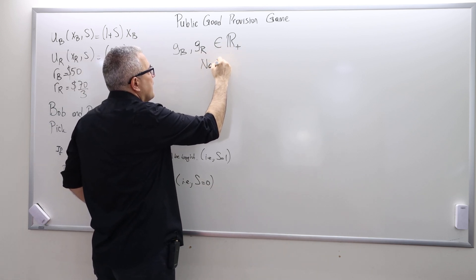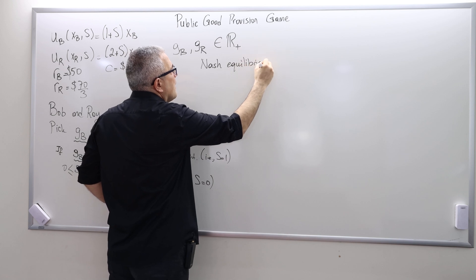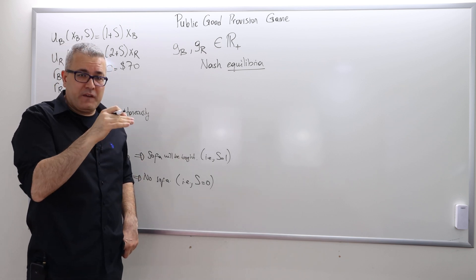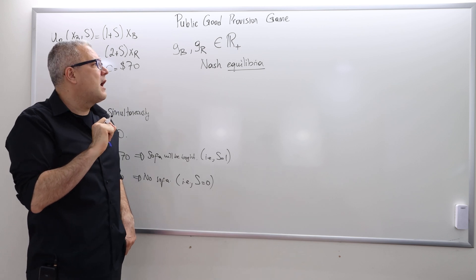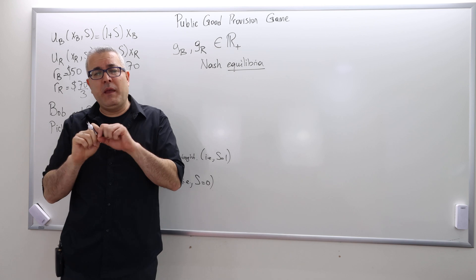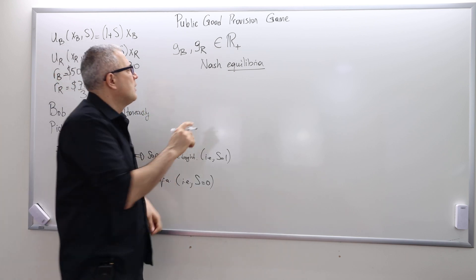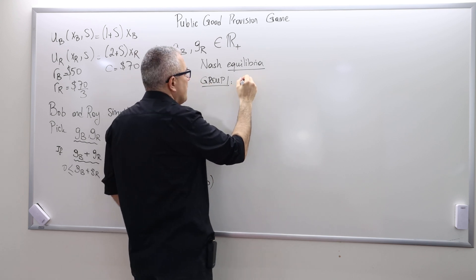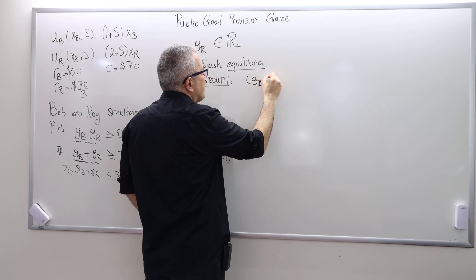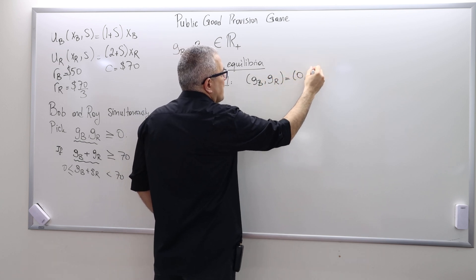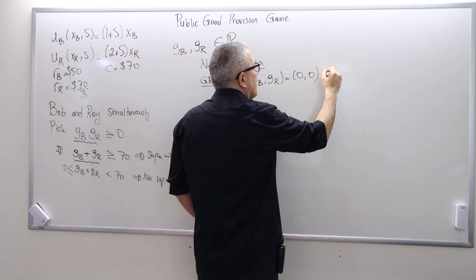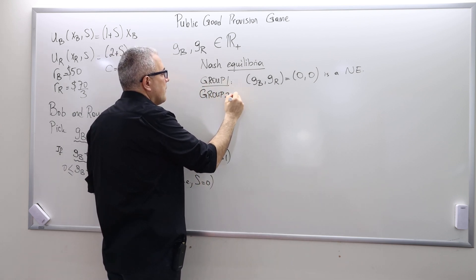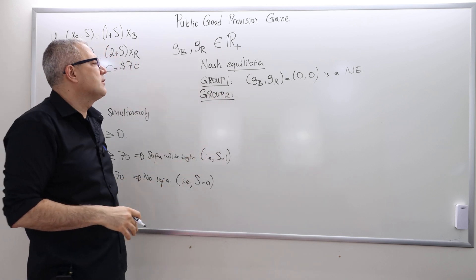We can nevertheless talk about the Nash equilibria of this game — 'equilibria' being the plural of 'equilibrium.' In this game there are in fact infinitely many possible equilibria. However, these infinitely many equilibria can be divided into two groups. Group one contains only one equilibrium: Bob and Ray both contribute zero dollars.